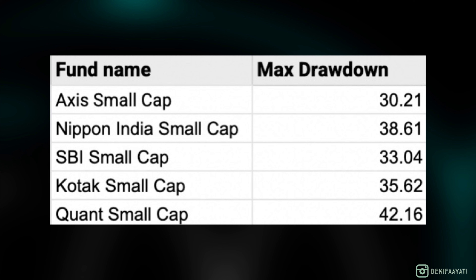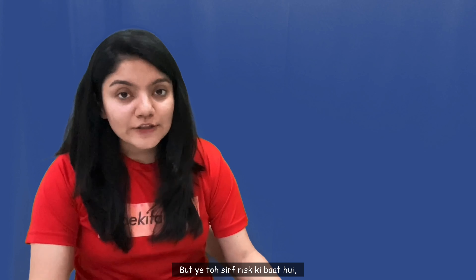As you can see here, Axis Small Cap and SBI Small Cap have the highest maximum drawdown, which is not a good sign. This matches our data for standard deviation as well. Kotak Small Cap is at number 3 and Nippon India Small Cap at 4th.